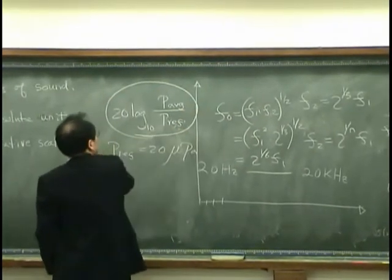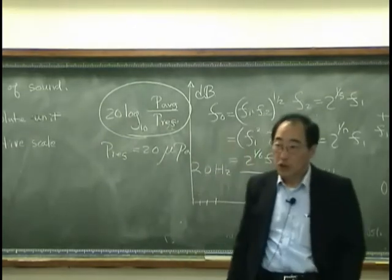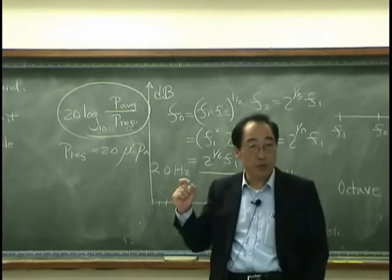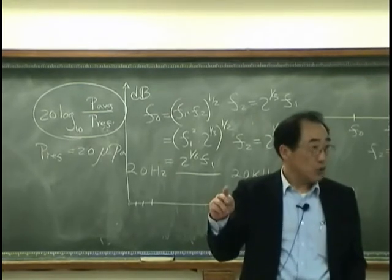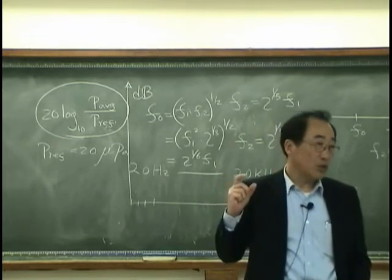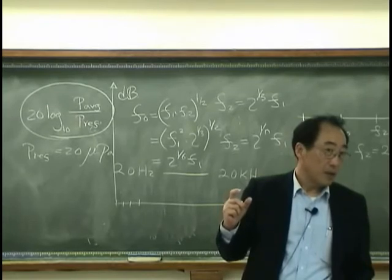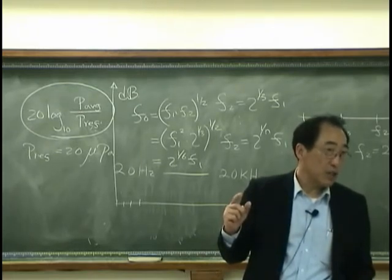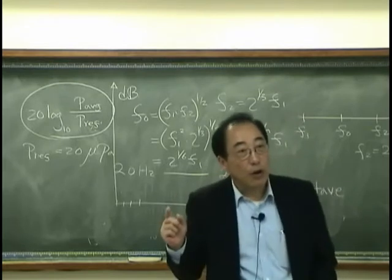This ratio we call decibel. Zero decibel means the pressure we hear is the same as reference pressure. Zero decibel means the pressure we hear is the reference pressure to the one-half power.